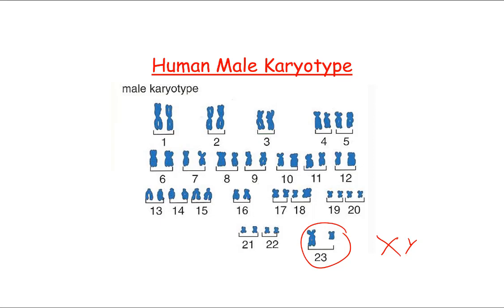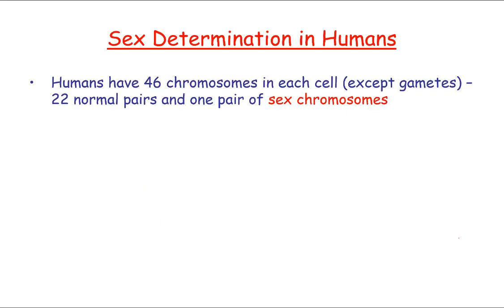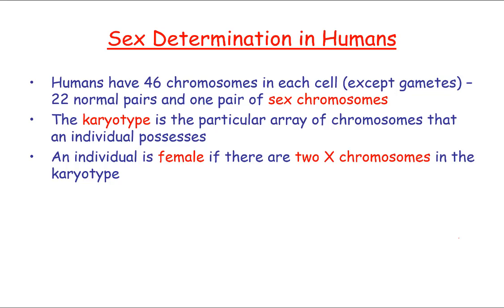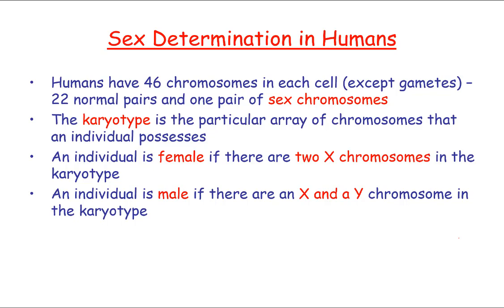You'll notice the male has one X and one smaller chromosome — this smaller one is the Y chromosome. Because Y is smaller, it carries fewer genes, and that's going to be really important when we look at sex-linked diseases. Humans have 46 chromosomes in each cell except gametes — 22 normal pairs and one pair of sex chromosomes. An individual is female if it has two X chromosomes, and male if it has an X and a Y chromosome.